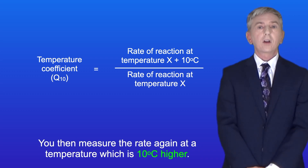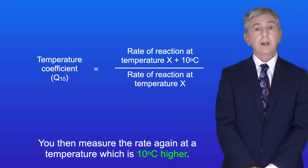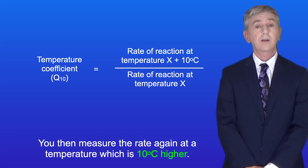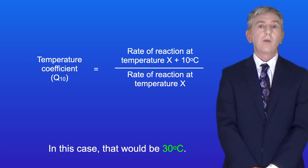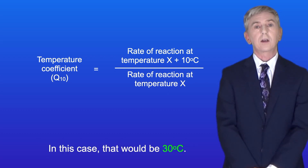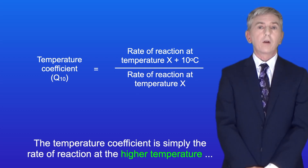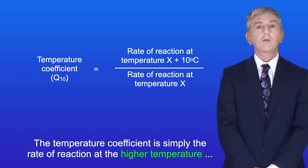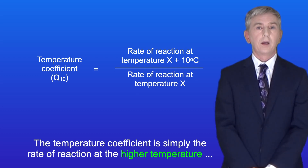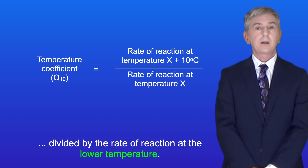You then measure the rate again at a temperature which is 10 degrees Celsius higher — in this case that would be 30 degrees Celsius. The temperature coefficient is simply the rate of reaction at the higher temperature divided by the rate of reaction at the lower temperature.